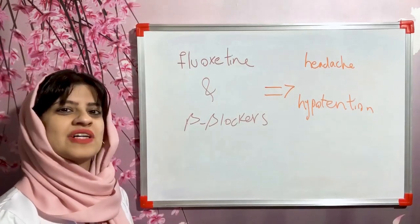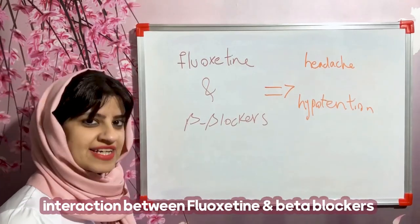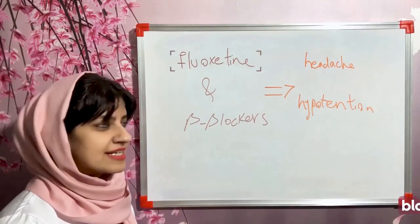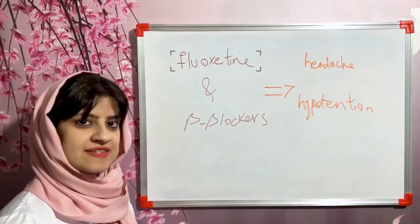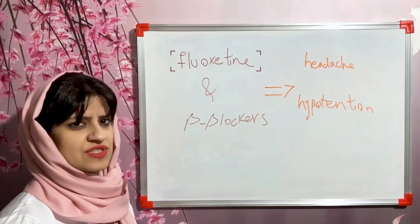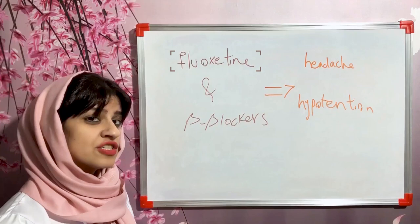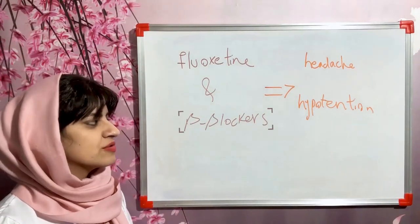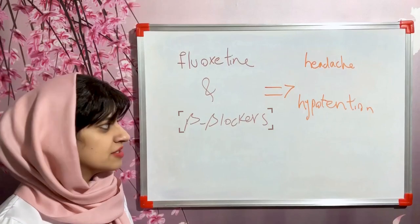Hi everyone, in this video we want to discuss the interaction between fluoxetine and beta blockers. Fluoxetine is a selective serotonin reuptake inhibitor used for the management of depression, anxiety, and other psychological problems. Beta blockers including metoprolol and carvedilol are used for many cardiovascular problems.